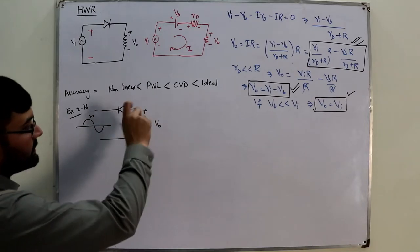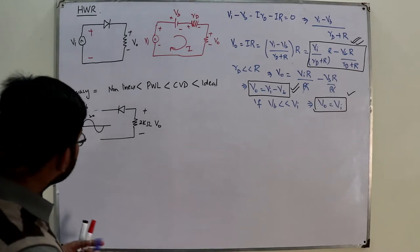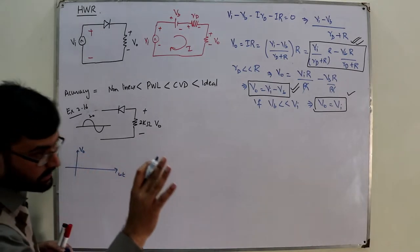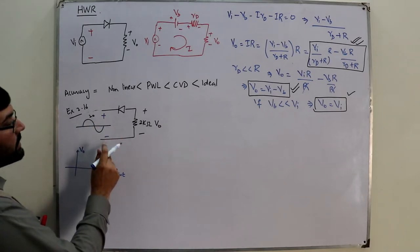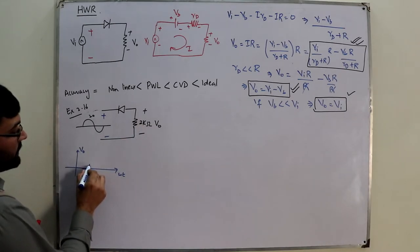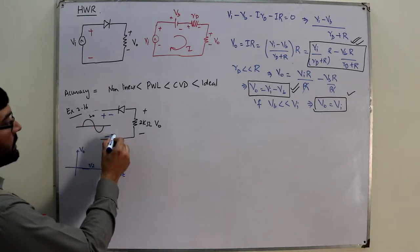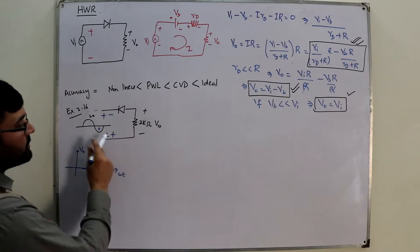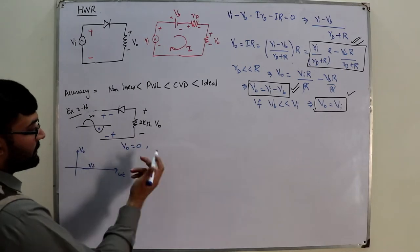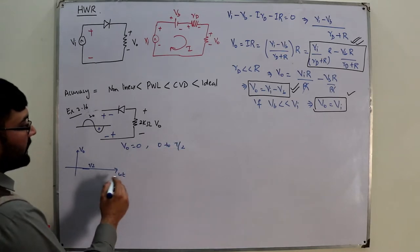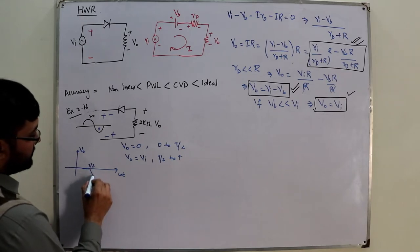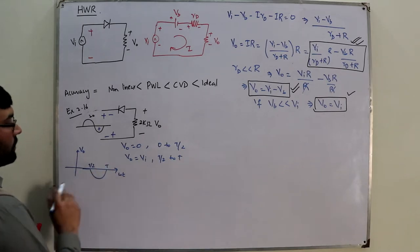The diode is reverse-connected, so in the positive half cycle the diode is reverse biased — no current flows and the output is zero from 0 to T/2. In the negative half cycle the diode is forward biased, so v_output equals v_input from T/2 to T. This gives the output waveform.